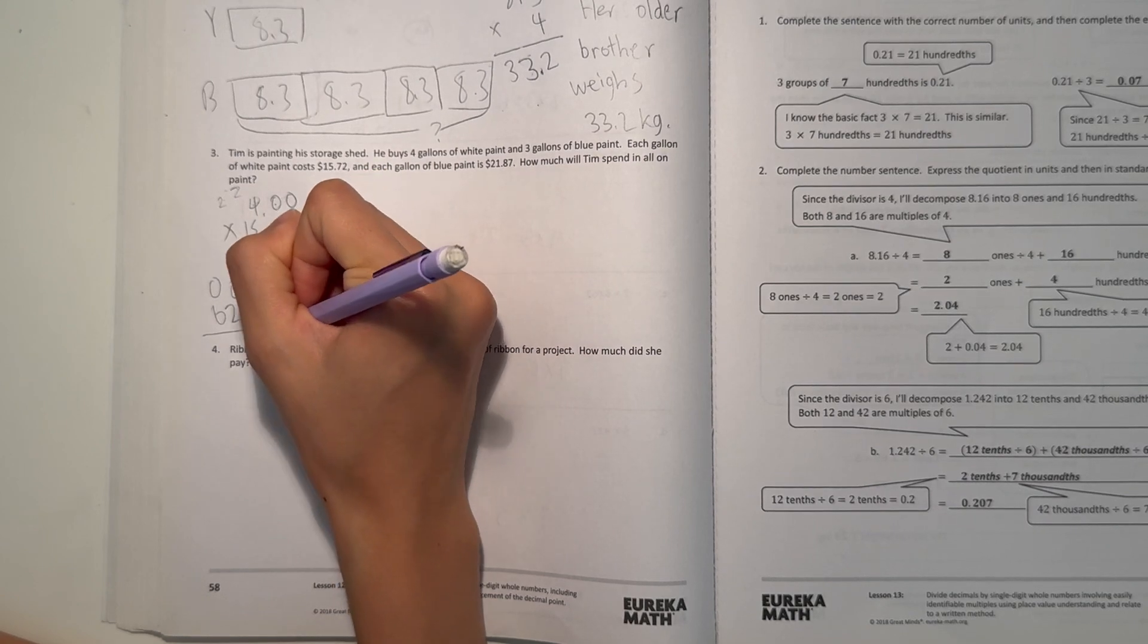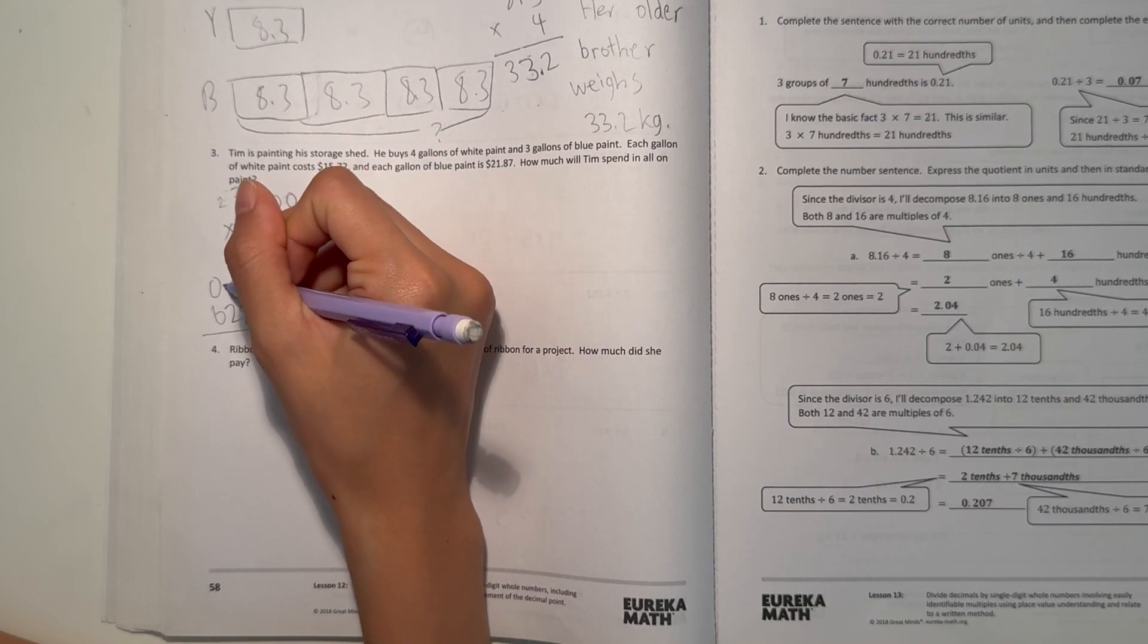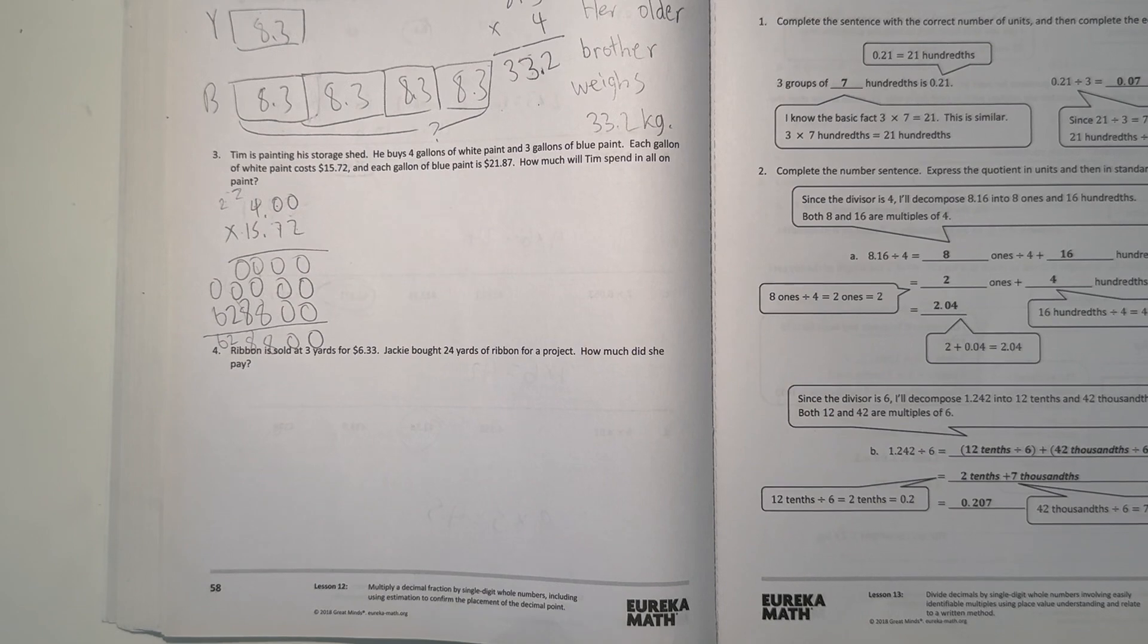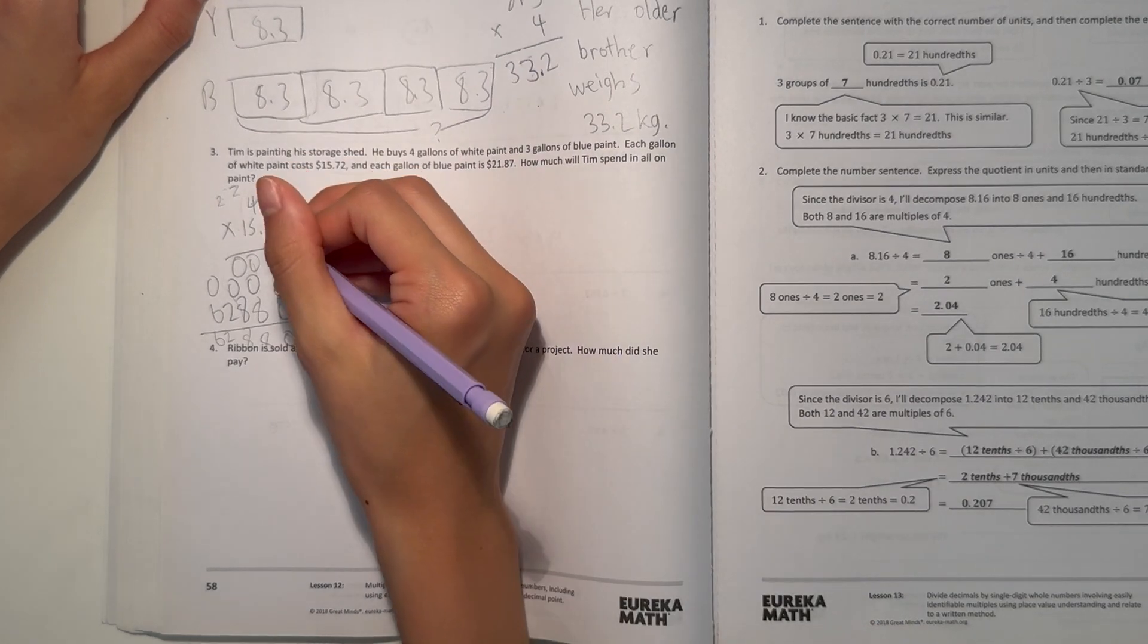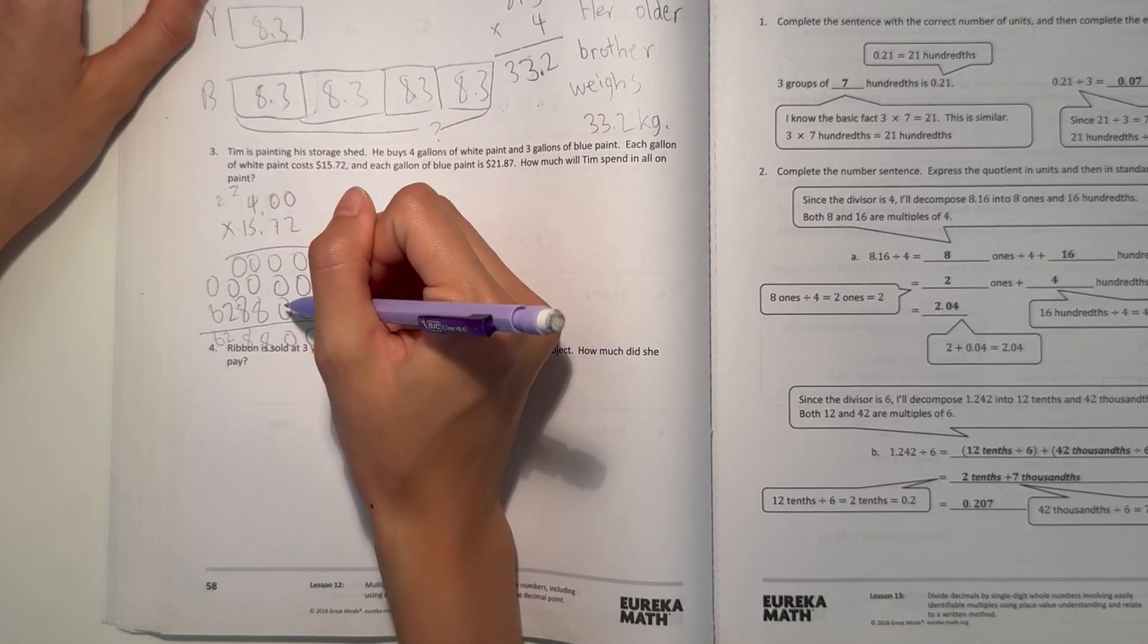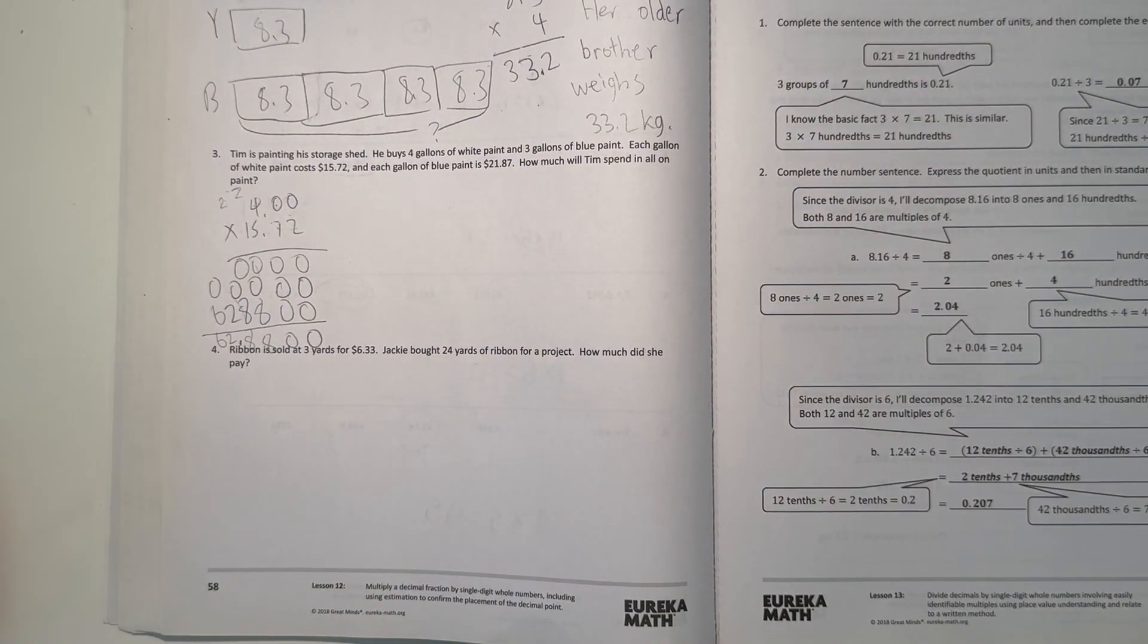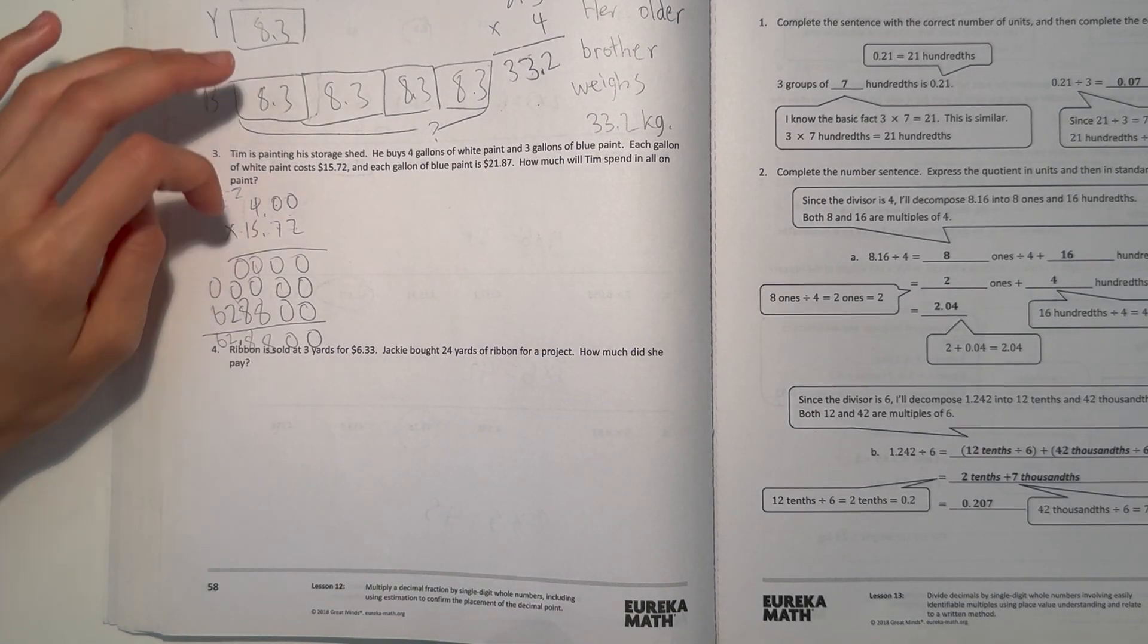So let's add it all together. 0, 0, 0, 0. Oh, I kind of know why. It's 8, 8, 8, 6. Alright, now move the decimal point in. We have 1, 2, 3, 4. So that's 1, 2, 3, 4. So $62.88 is how much she spends on the white paint.